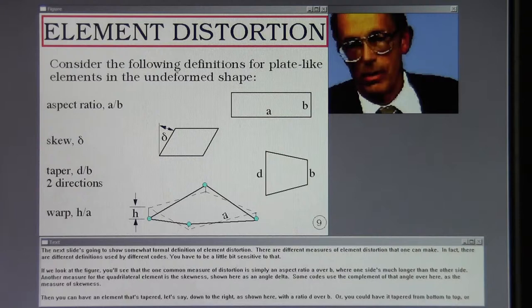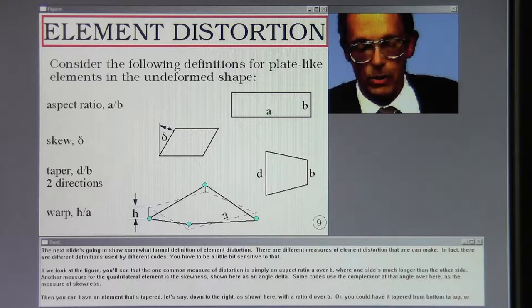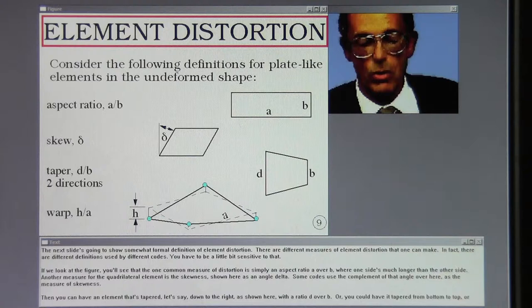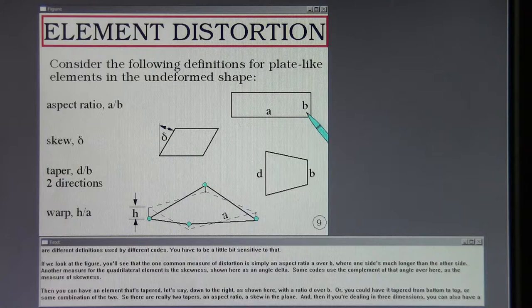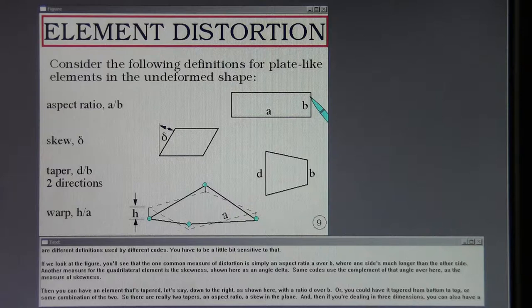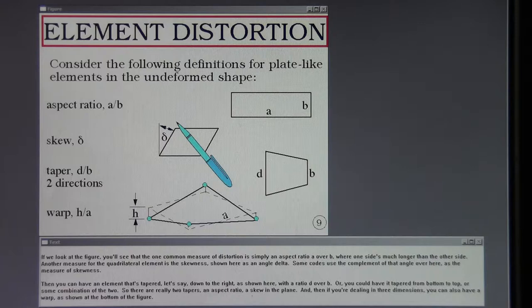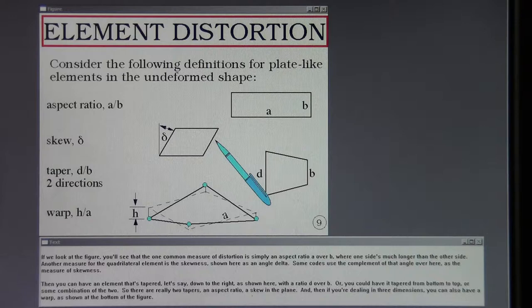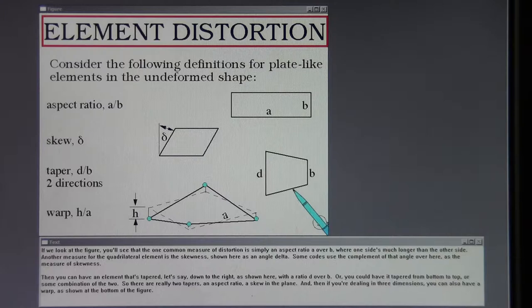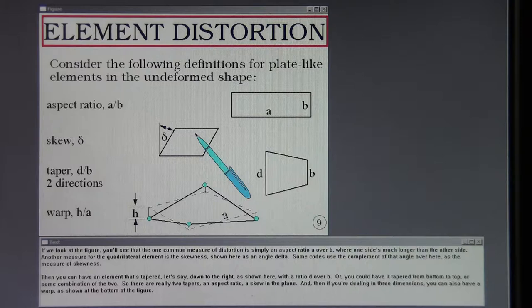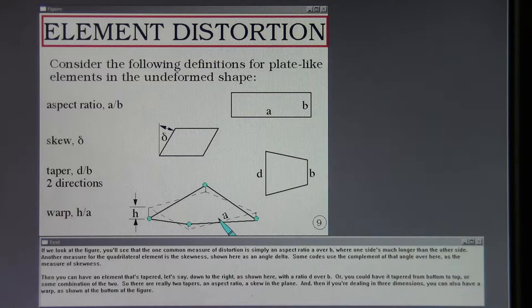The next slide is going to show a somewhat formal definition of element distortion. There are different measures of element distortion that one can make. In fact, there are different definitions used by different codes, so you have to be a little bit sensitive to that. If we look at the figure, you'll see that the one common measure of distortion is simply an aspect ratio, A over B, where one side's much longer than the other side. Another measure for the quadrilateral element is the skewness, shown here as an angle delta. Some codes use the complement of that angle over here as the measure of skewness. Then you can have an element that's tapered, let's say, down to the right, as shown here, with the ratio D over B, or you could have it tapered from bottom to top, or some combination of the two. So there are really two tapers and aspect ratio askew in the plane, and then if you're dealing in three dimensions, you can also have a warp as shown at the bottom of the figure.